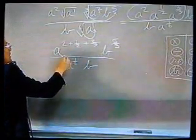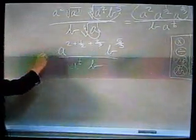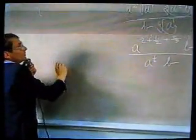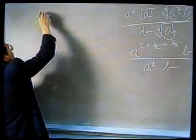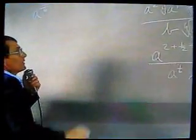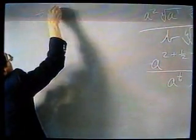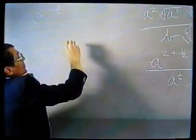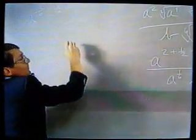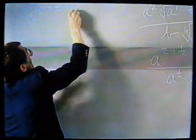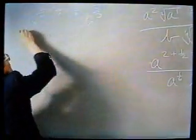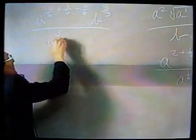Change them all into sixths. This one will become a to the twelve-sixths, and plus one-half is three-sixths, and two-thirds is four-sixths. We're bringing along the b to the five-thirds, and the a to the one-sixth b.